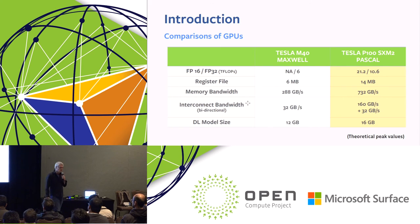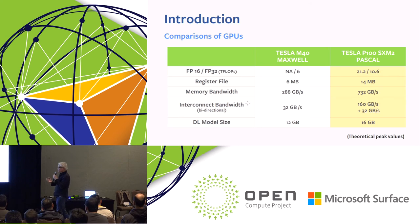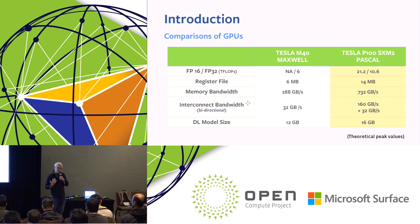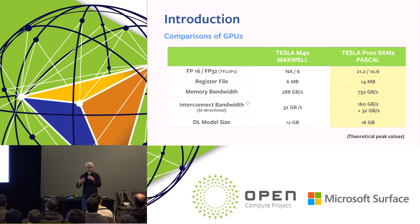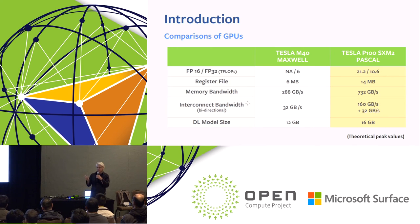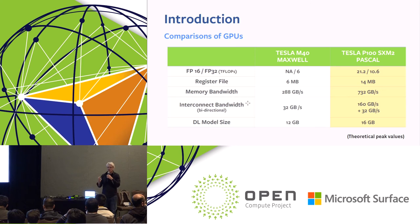The memory bandwidth — one of the most correlated things with deep learning training throughput — is phenomenally improved: 732 gigabytes per second of memory bandwidth in the GPU. The interconnect bandwidth so GPUs can communicate with each other, which is critical for gradient descent and all-reduce steps in deep learning training, also shows a massive performance improvement. And memory size got bigger so you can store larger and more complex neural network models with more training data.